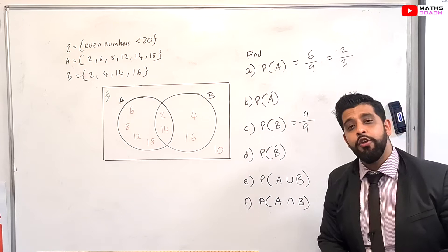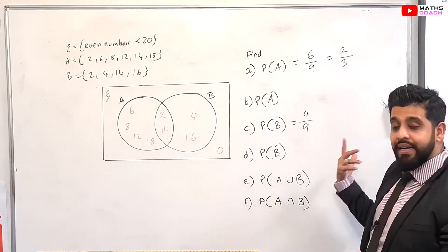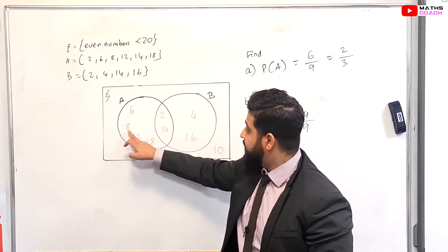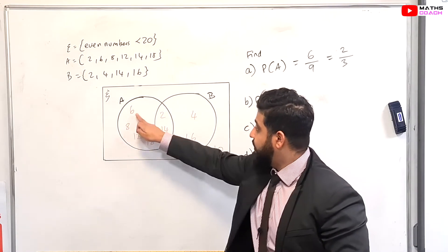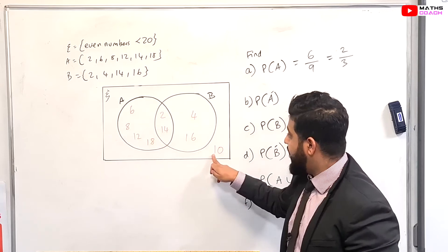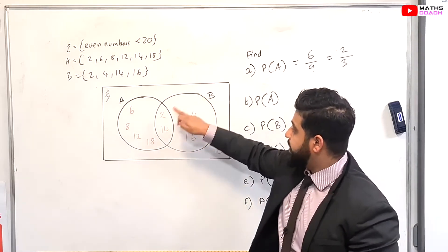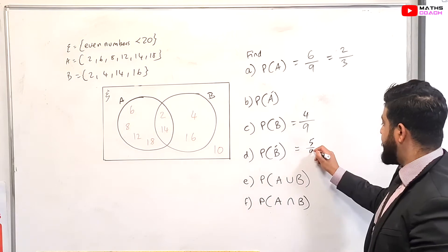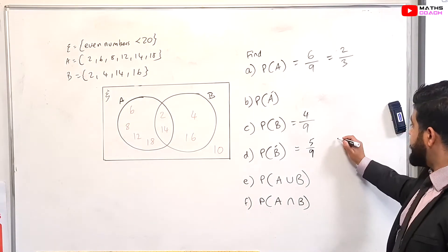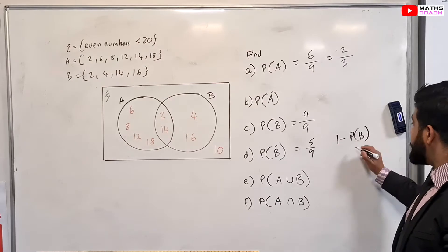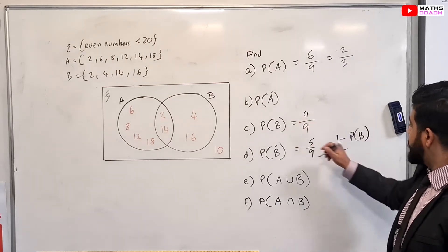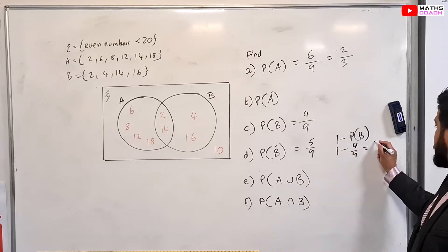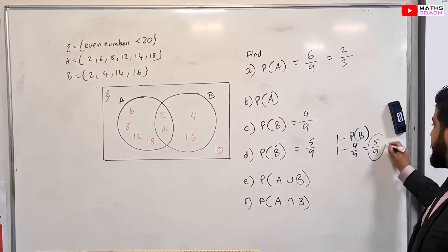Right, what did you get for not B? If you didn't do 1 minus that, then you could look at the circle B and look at all the numbers that are not B. So that, that, that, that, and that are not inside the circle B. So 1, 2, 3, 4, 5 out of 9. But if you did use 1 minus, you could do 1 minus the probability of B happening. So therefore, 1 minus B happening was 4 over 9. So that will be 1 minus that, and that will be 5 over 9 as well.